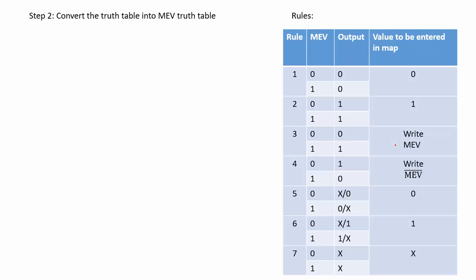Step 2 is to convert the truth table into a map entered variable truth table. To do this, we have 7 rules. Based on these 7 rules, we will determine what values must be entered in the map entered variable truth table.